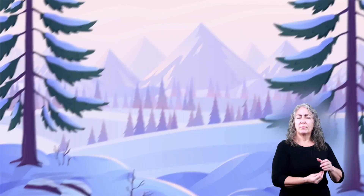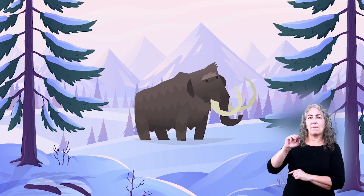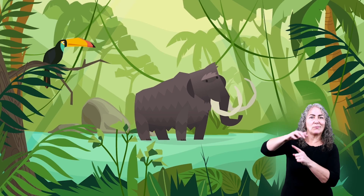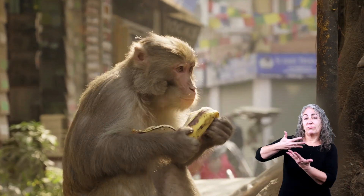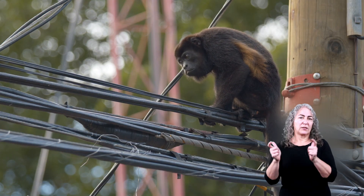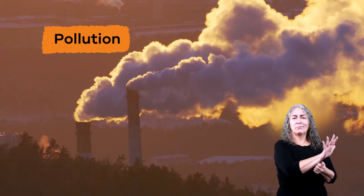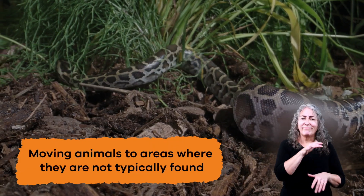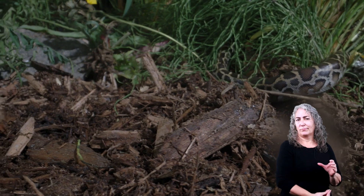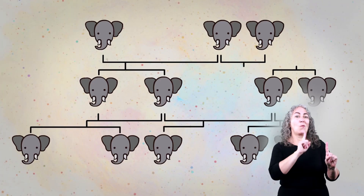An example of this type of extinction happened 10,000 years ago with the woolly mammoth, which died out because of climate change and the disappearance of its habitat. Human interaction is another form of extinction and typically happens due to over hunting or habitat destruction. Pollution, deforestation, and moving animals to areas where they are not typically found all contribute to extinction.